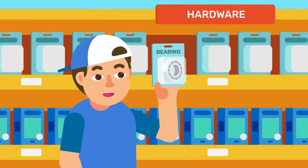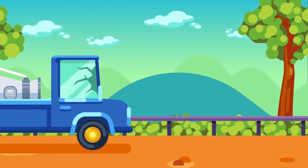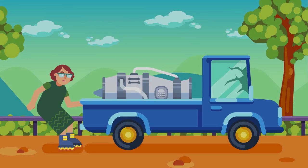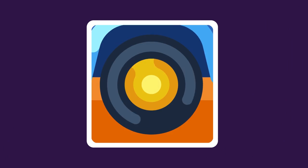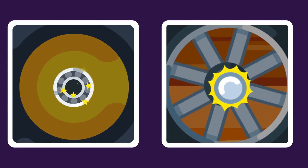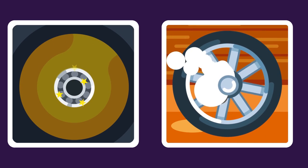Ball bearings are used to reduce friction between moving parts of cars, machines, and inline skates. Placed between moving parts, ball bearings roll around and prevent moving parts from rubbing against each other. This reduces the wear and tear of these parts.